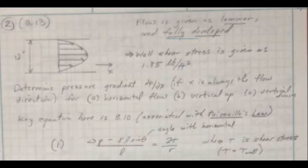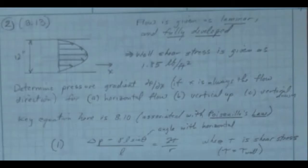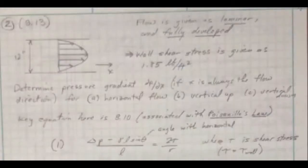So we're saying it's laminar and it's fully developed, which is basically saying that the parabola velocity distribution is happening here. It doesn't really matter that much because they tell us what the shear stress is. In this case it's 1.85 pounds per square foot.